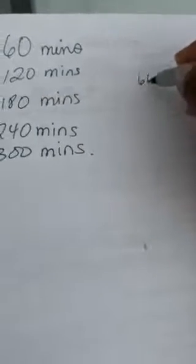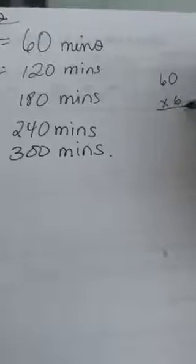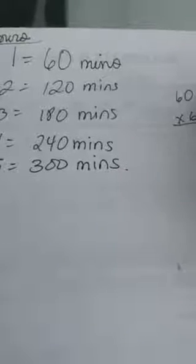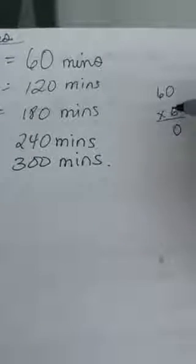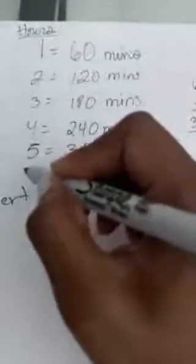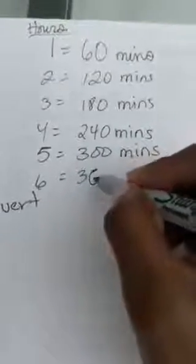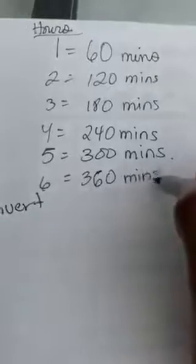For example, 60 minutes are in one hour. If I want to find out how many minutes are in six hours, all I need to do is 6 times 60. Six times zero is zero, six times six is thirty-six. I know that there are 360 minutes in six hours.